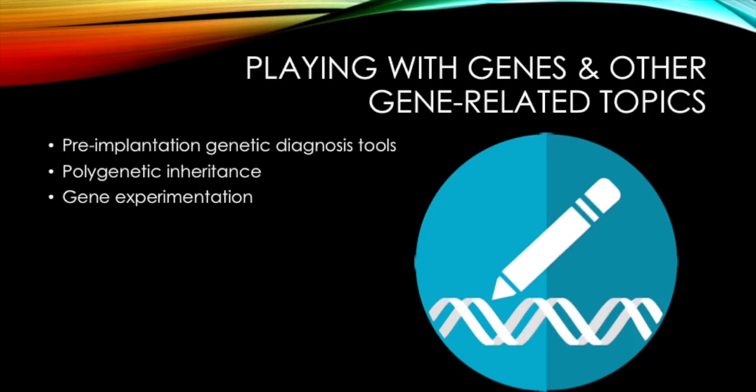Polygenetic inheritance are traits that result from multitudes of genes acting together, such as intelligence. Genetic experimentation can take the form of gene manipulation, editing, as well as experimental breeding of animals like mice to see how certain traits manifest themselves. These however are controversial, though some argue that this is the same as selective breeding in encouraging the selection of good traits.